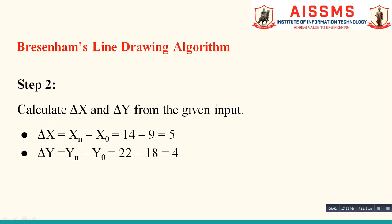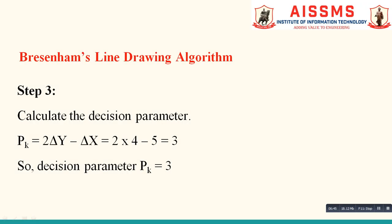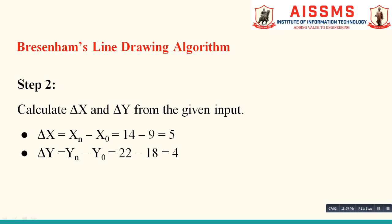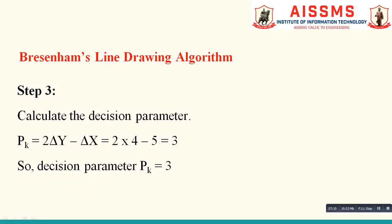Our next step is to calculate the value of the decision parameter pk. The decision parameter decides where to plot the next point of the line, and the formula is 2 times delta y minus delta x. The values of delta x and delta y are already calculated in step 2: delta x is 5 and delta y is 4. Putting those values into the equation, we get pk equal to 3.